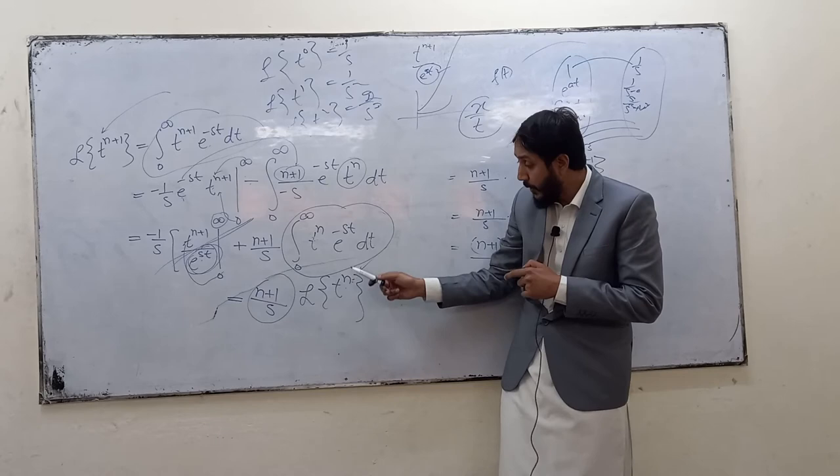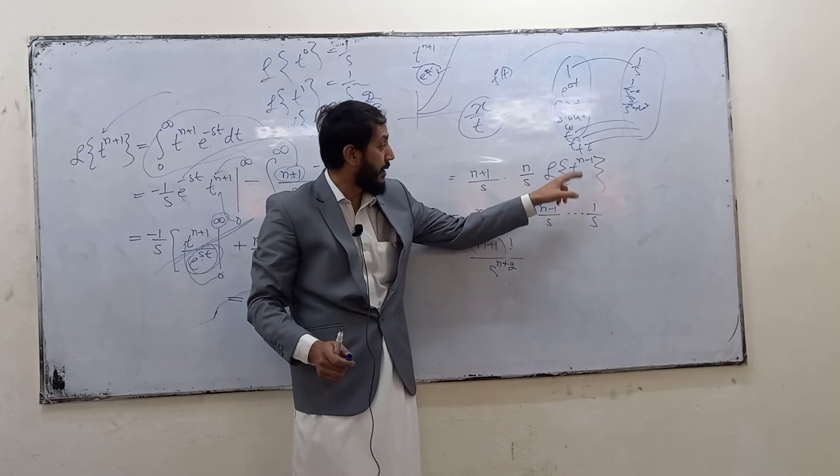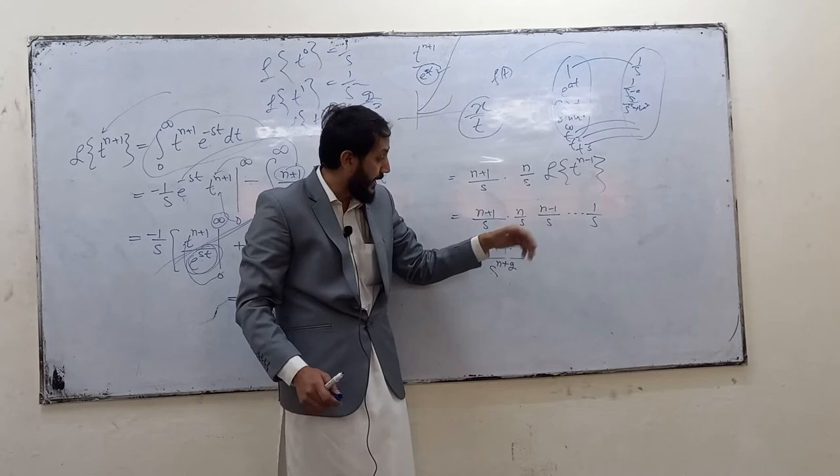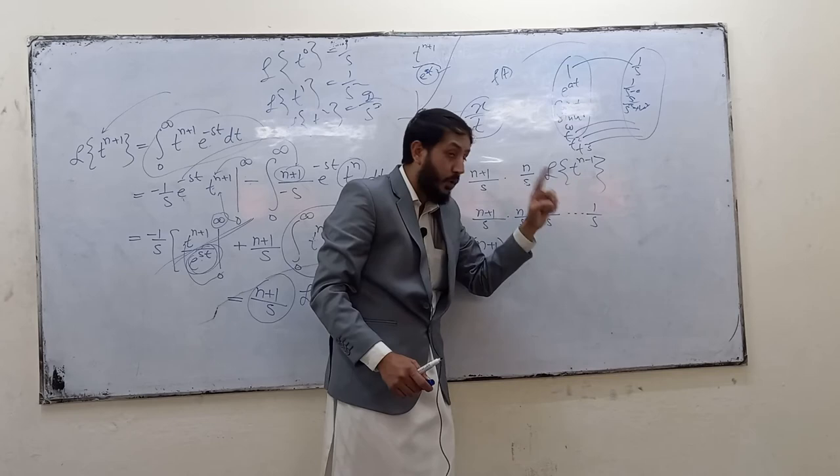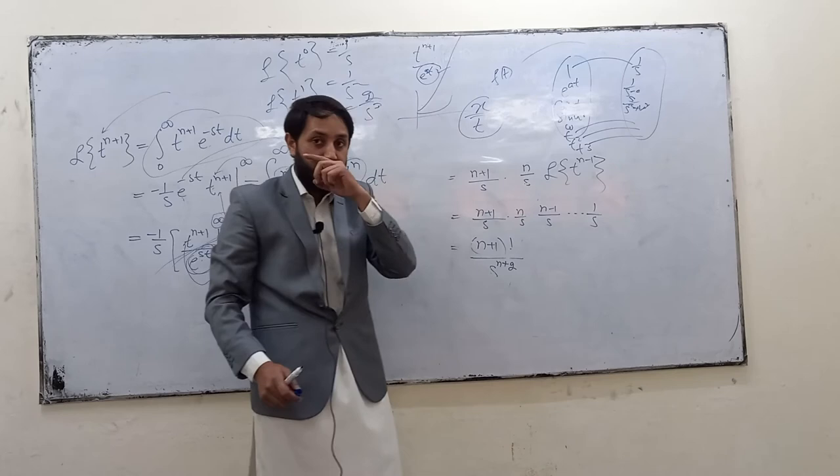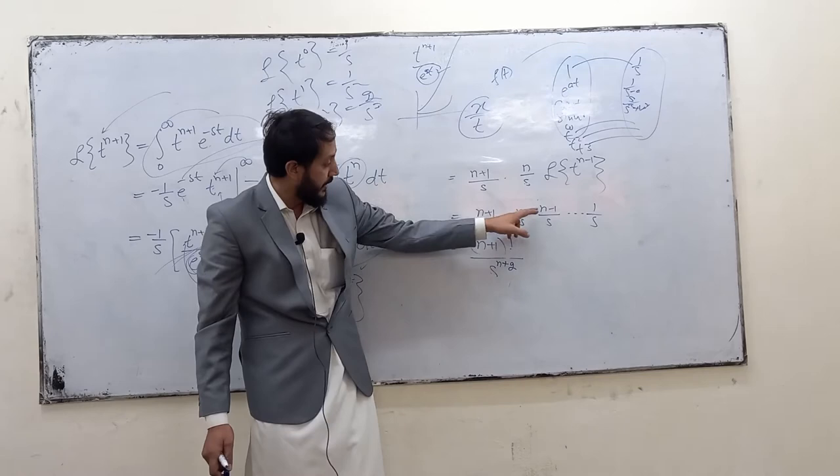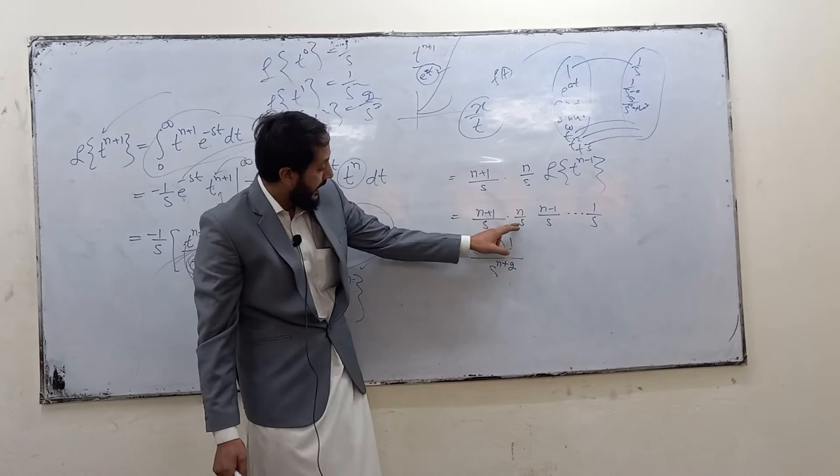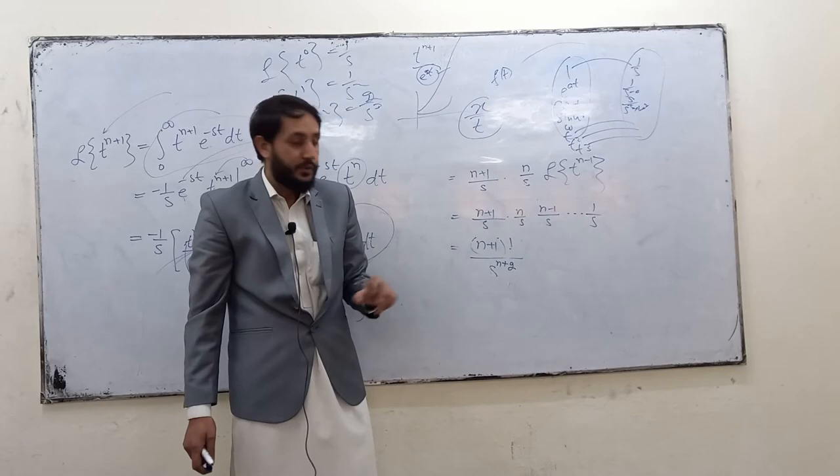And you will have the Laplace transform of t^(n-1). If you again apply the Laplace transform, you will have (n-1) and 1/s with it. And so on, by decreasing its power, at last we will have 1 over here, because t^0 is 1. And we know that Laplace transform of 1 is 1/s. So, this is nothing but actually factorial function. (n+1) into n, (n-1), and so on. This is nothing, but this becomes a factorial function. And here, s, s, s, and so on, up to here, this will become s^(n+1).